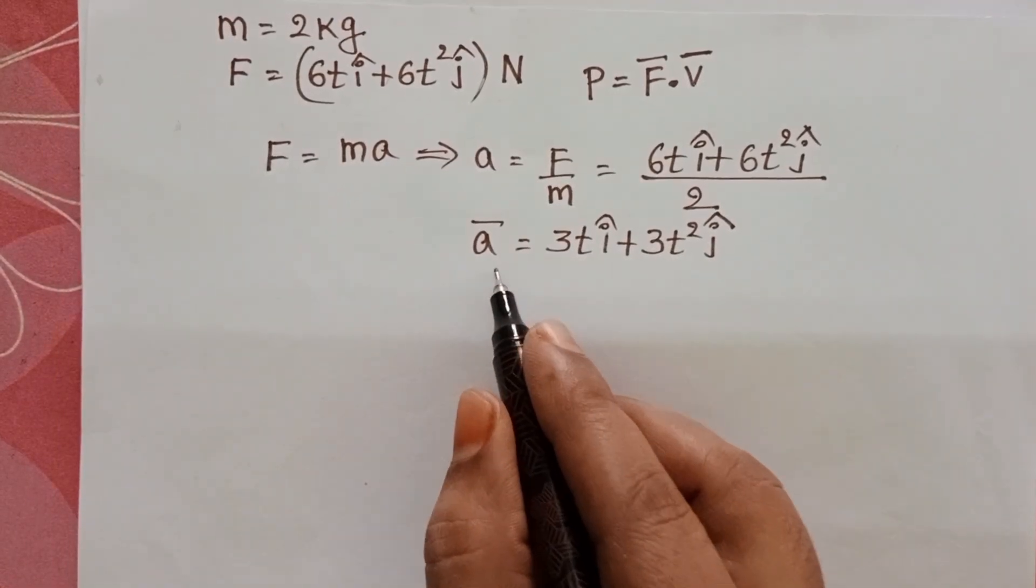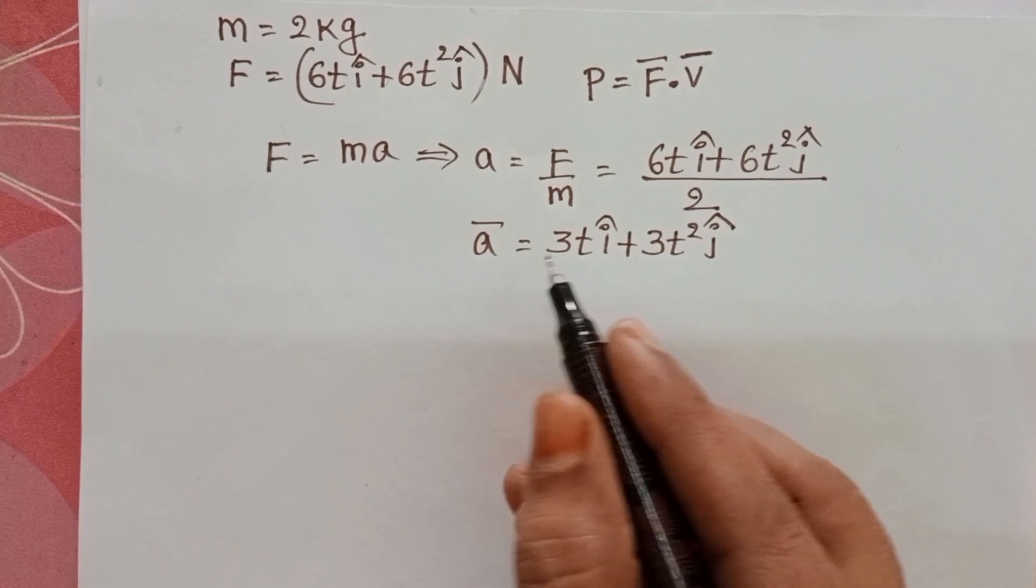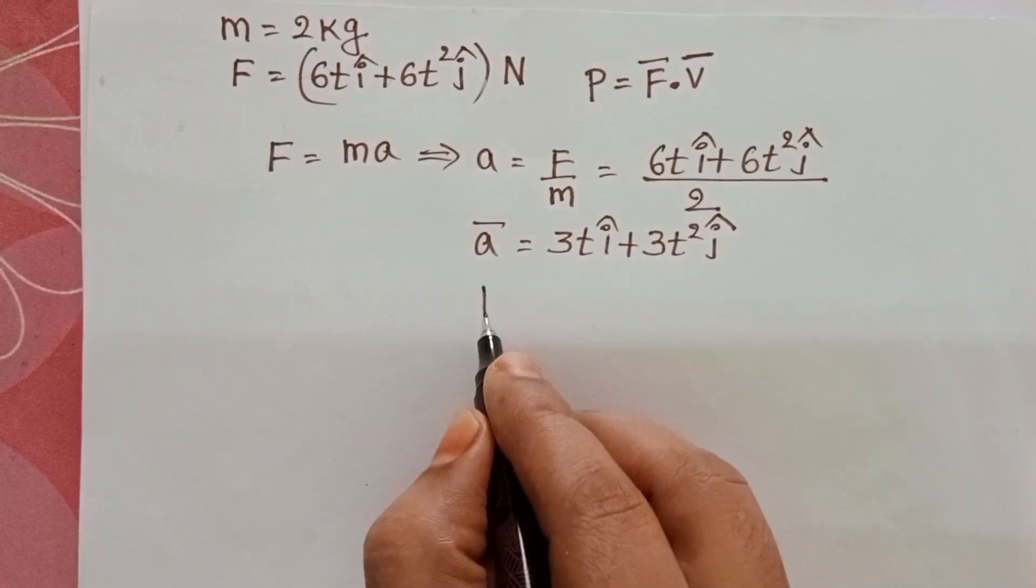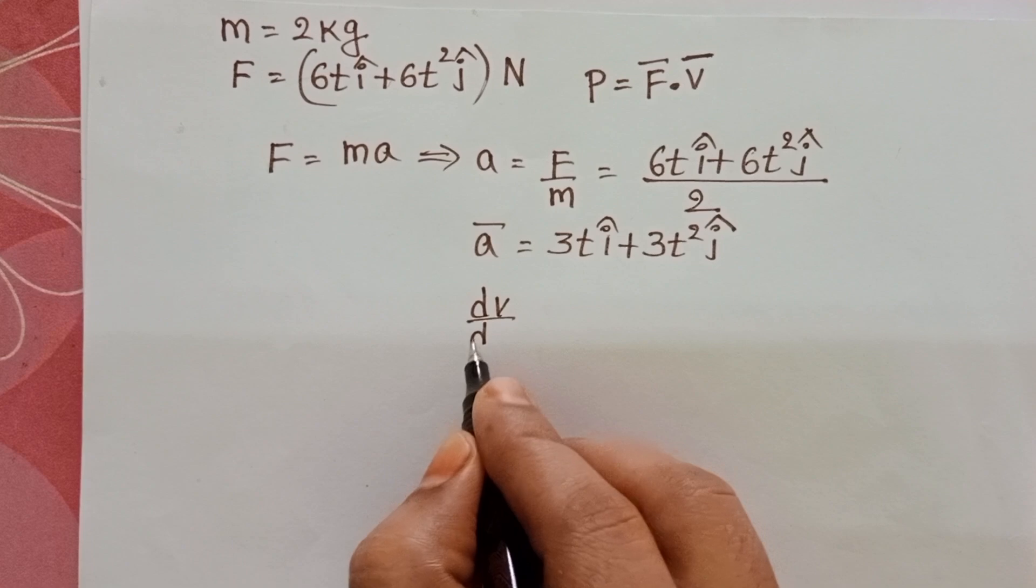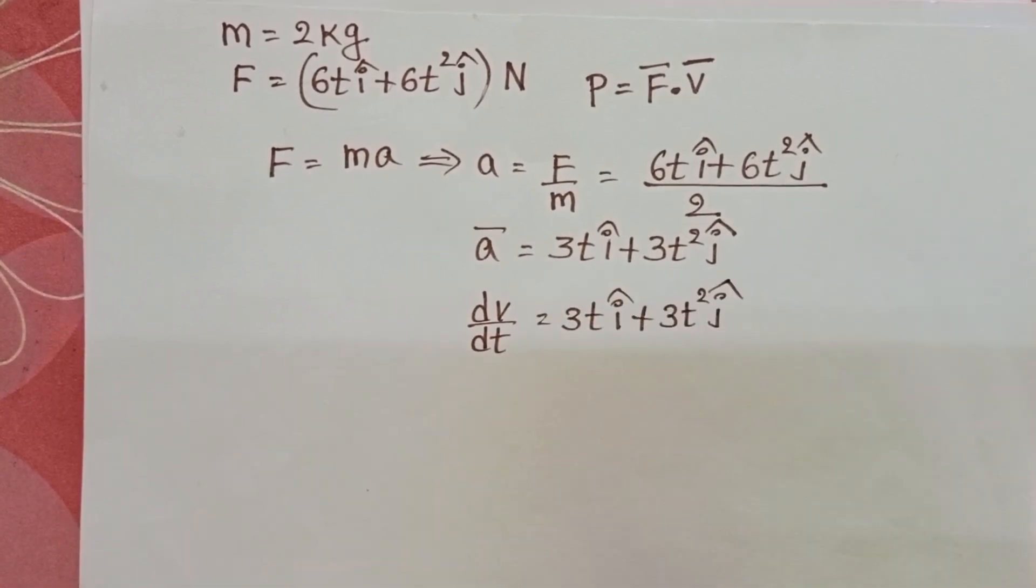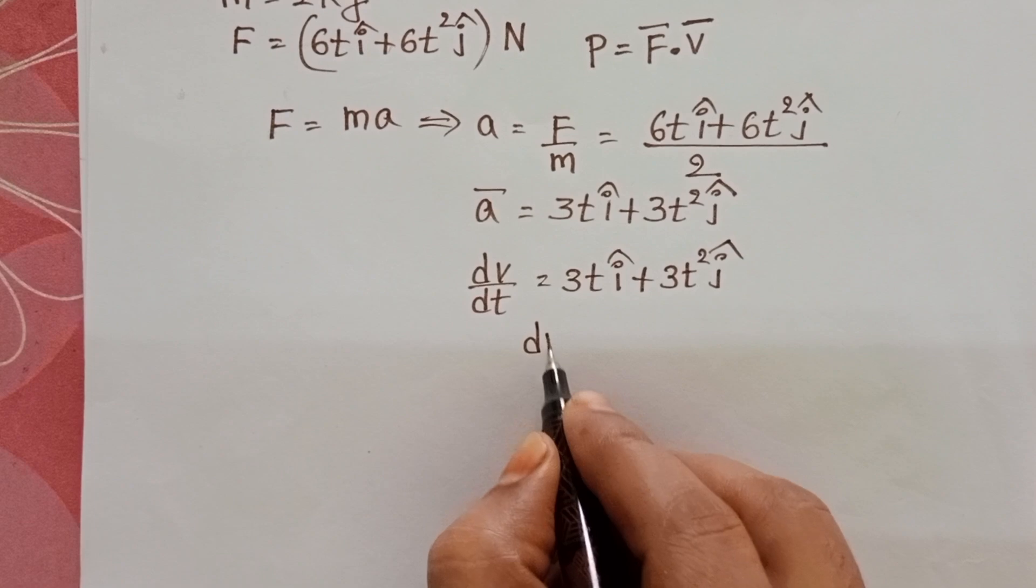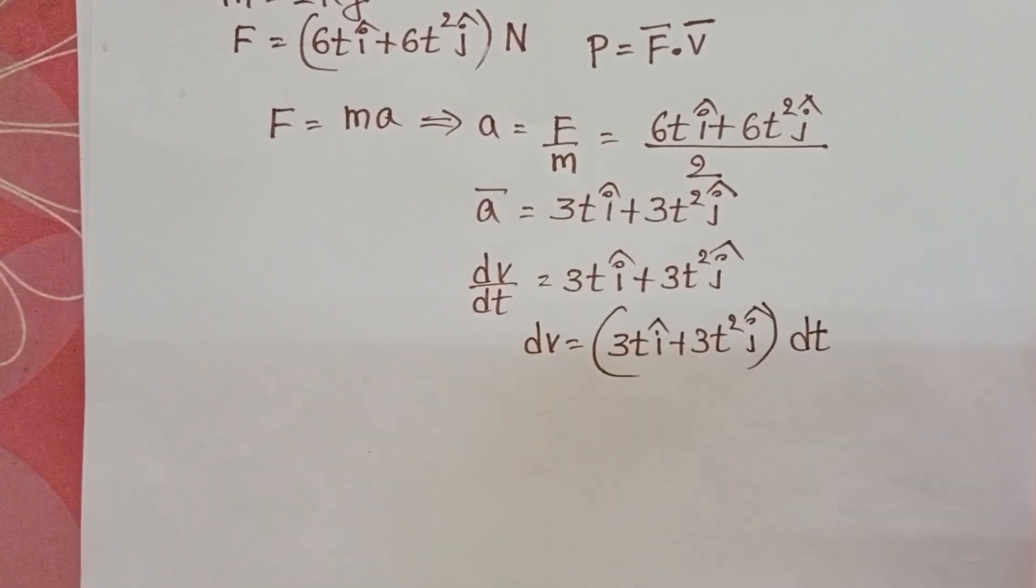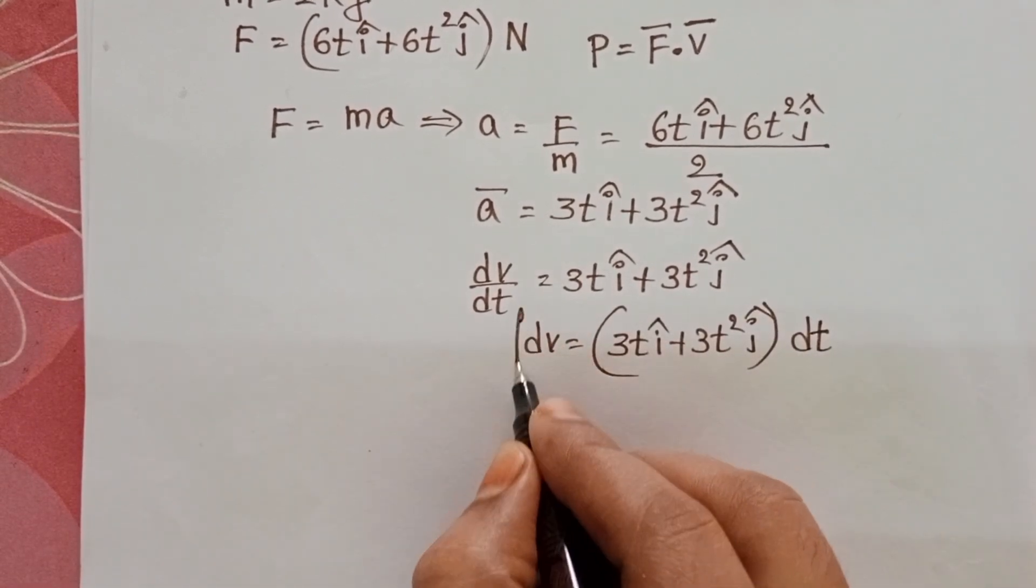We know the rate of change of velocity is acceleration. So dV/dt equals this vector. Now dV equals the acceleration times dt. Taking integration on both sides.